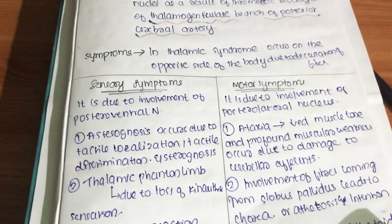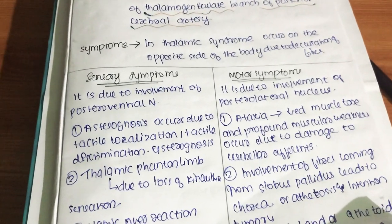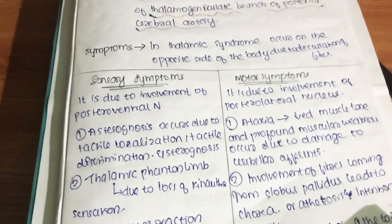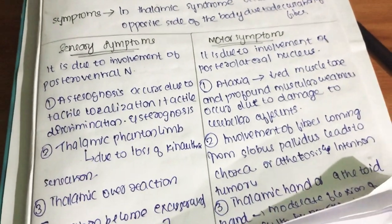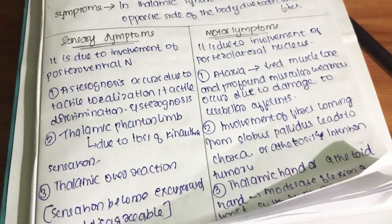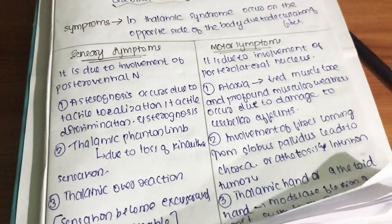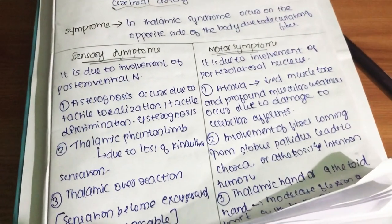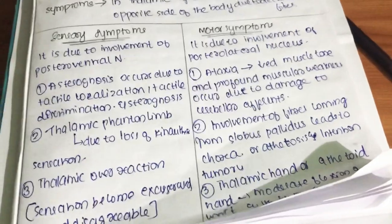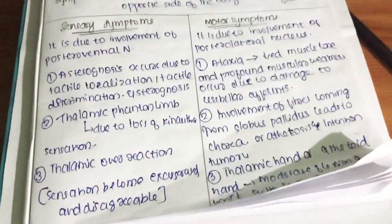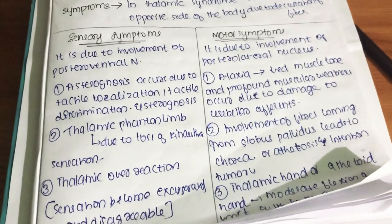The next sensory symptom is thalamic phantom limb, which is due to the loss of kinesthetic sensation. When the subject closes their eyes, they are not able to determine where their limb is — they cannot sense the position of their own limb.